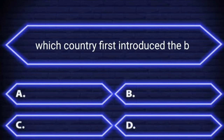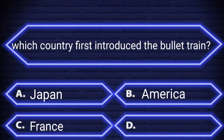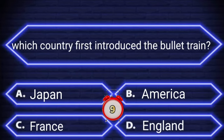Which country first introduced the Bullet train? A. Japan, B. America, C. France, D. England. Your time starts now. The right answer is Japan. See you next time.